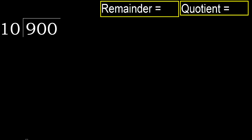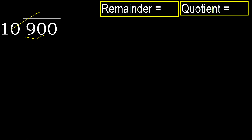900 divided by 10. 9 is less, therefore next. 90 is not less, therefore work with 90. Multiply by which number is nearest to 90, but not greater.